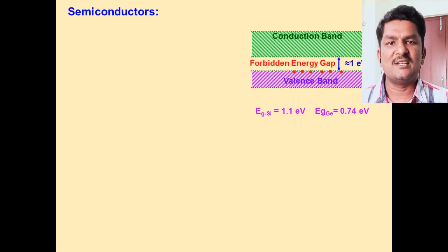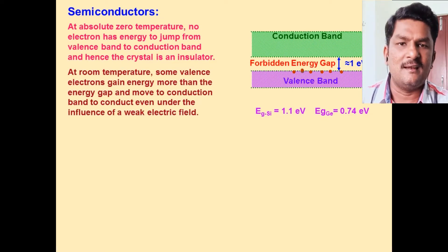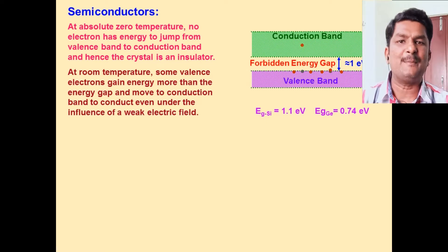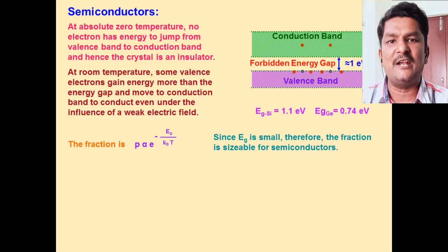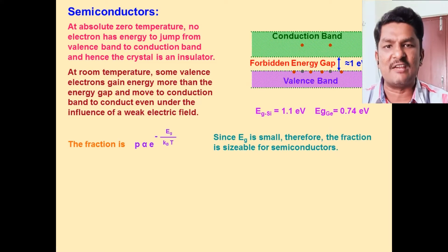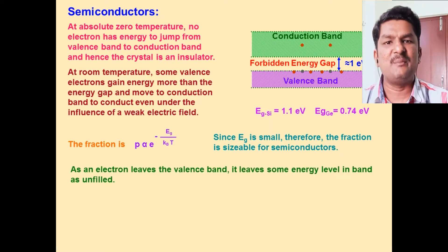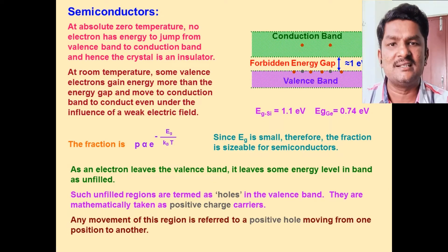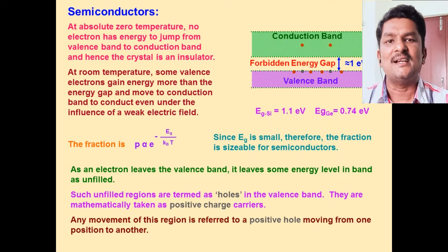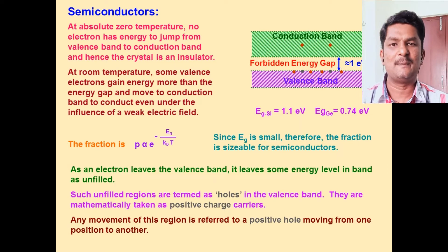Germanium and silicon are the best examples of semiconductors. The forbidden energy gap for silicon is about 1.1 electron volt and for germanium it is 0.74 electron volt. According to the NCERT book, for germanium it is 0.72 electron volt, so it is better to write the forbidden energy gap as about 0.7 electron volt, as it depends on several factors.